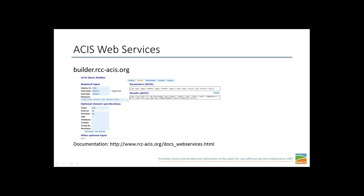This is the RCC ACIS Builder — a fantastic resource if you're developing web applications off of ACIS Web Services. You go in there and it'll help walk you through making a parameter string and show you what you should expect from it. If you're trying to debug why you're not getting exactly what you want back from ACIS Web Services, or trying to figure out what call you should be sending in the first place, it's just a fantastic resource. The documentation is also pretty clearly laid out for developing strings.